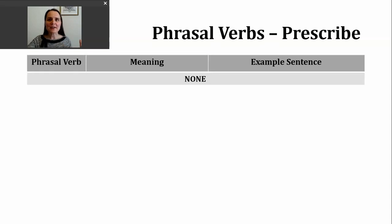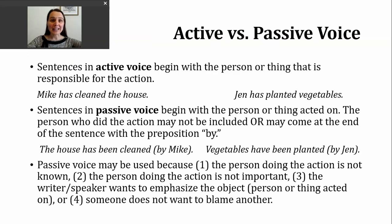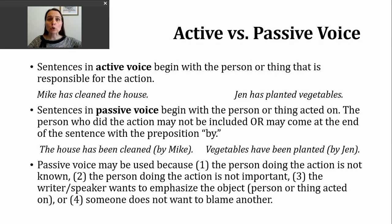You'll be happy to know we don't have any additional phrasal verbs that will significantly alter the meanings we just talked about. So that's going to allow us to spend more time talking about our verb of the day in the active voice and the passive voice. But let's start with a little review of active and passive. Sentences most commonly are written or spoken in the active voice, meaning they start with the person or thing that is responsible for an action. Two examples of this could be: Mike has cleaned the house. Jen has planted vegetables.